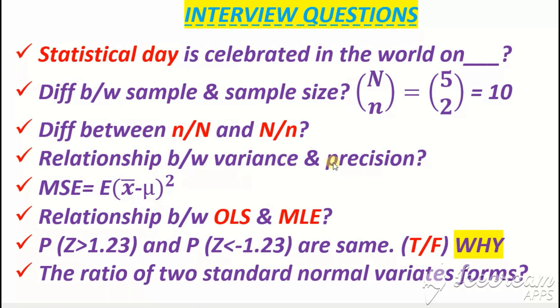Relationship between variance and precision: variance and precision are the opposite of each other. When you increase precision, variance will decrease. We always demand high precision.